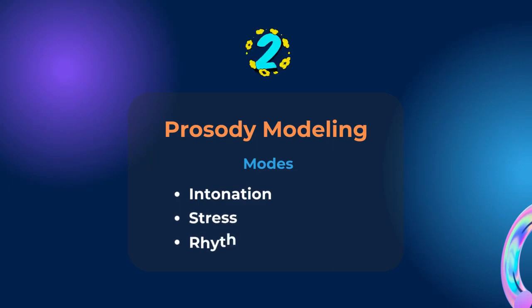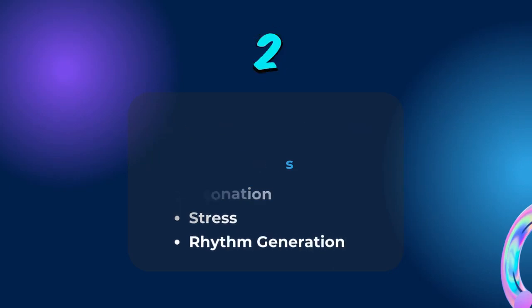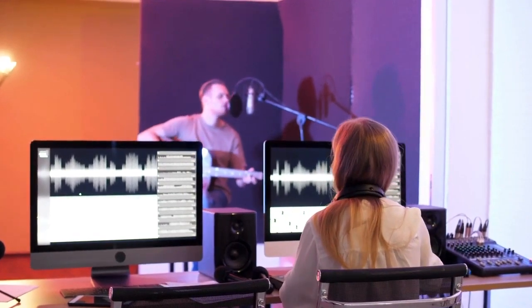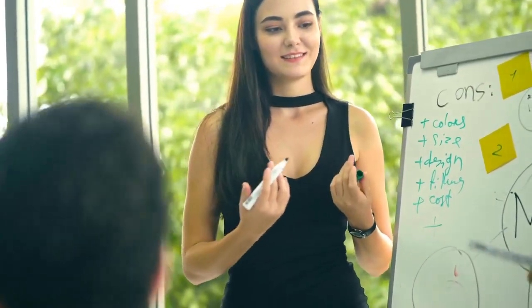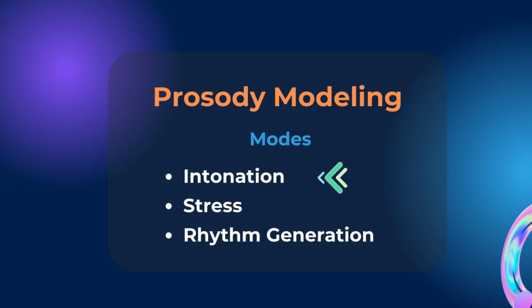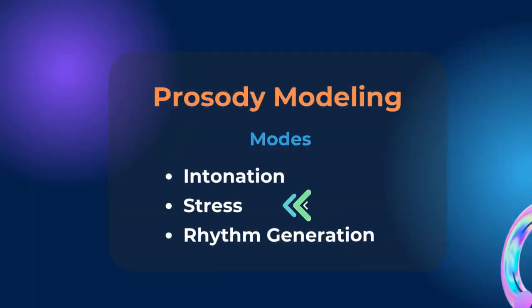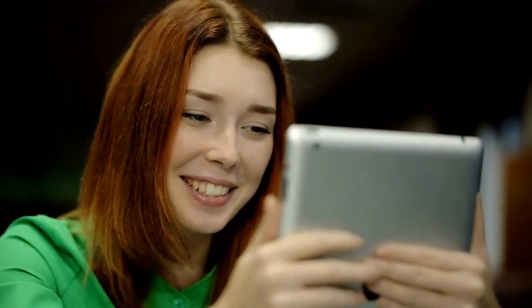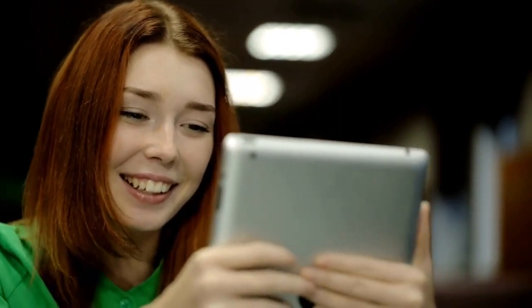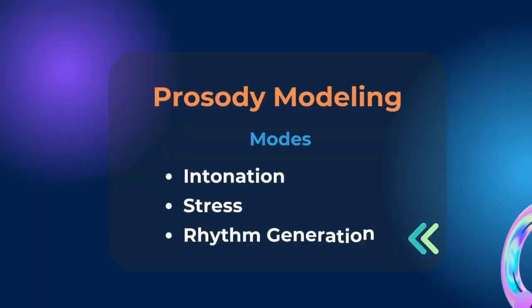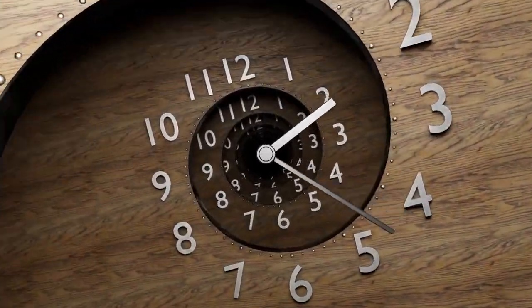The second component of TTS AI systems is prosody modeling. Prosody refers to the rhythm, intonation, stress, and pitch patterns that convey emotions and add naturalness to speech. Prosody modeling in TTS systems ensures that the synthesized speech sounds more human-like and expressive. Intonation refers to the rising and falling patterns of pitch in speech, and proper intonation is vital for conveying emotions and meaning in spoken language. Stress involves emphasizing certain syllables or words in a sentence, which contributes to the naturalness and clarity of speech. Rhythm generation in prosody modeling involves controlling the timing and pacing of speech, which helps make the generated speech sound more natural and human-like.